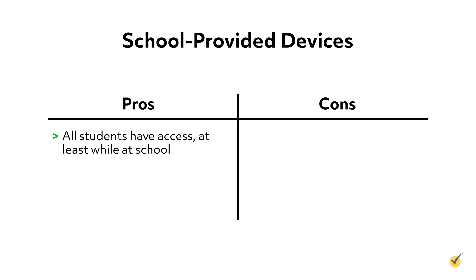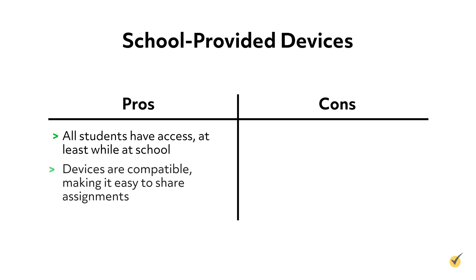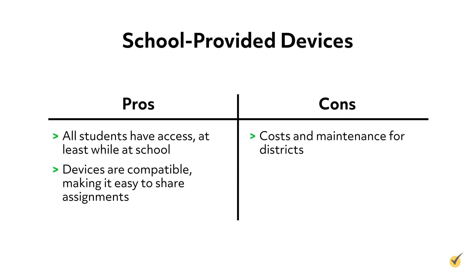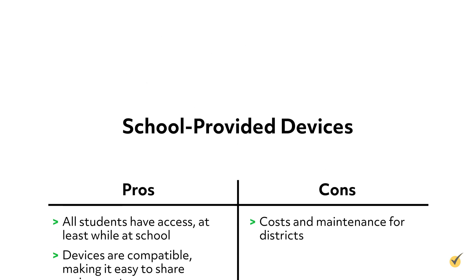With individual devices, students can each have differentiated instruction when needed. Additionally, providing students with the same devices eliminates the incompatibility issues that can occur when students bring their own. However, one downfall is that districts must pay to purchase and maintain a large number of devices. Additionally, if districts do not allow students to take the devices home, there are still equity issues with completing assignments from home.